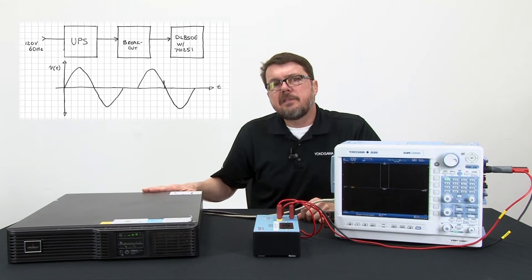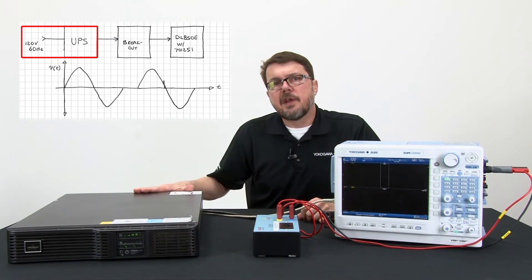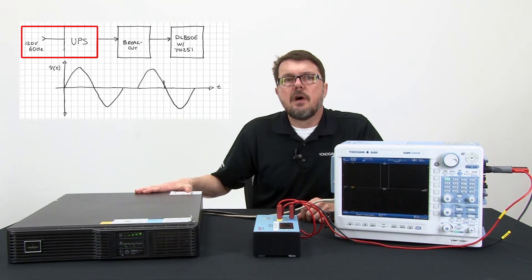The UPS AC input cord is connected to the grid. In this case, simply 120 volts, 60 hertz.